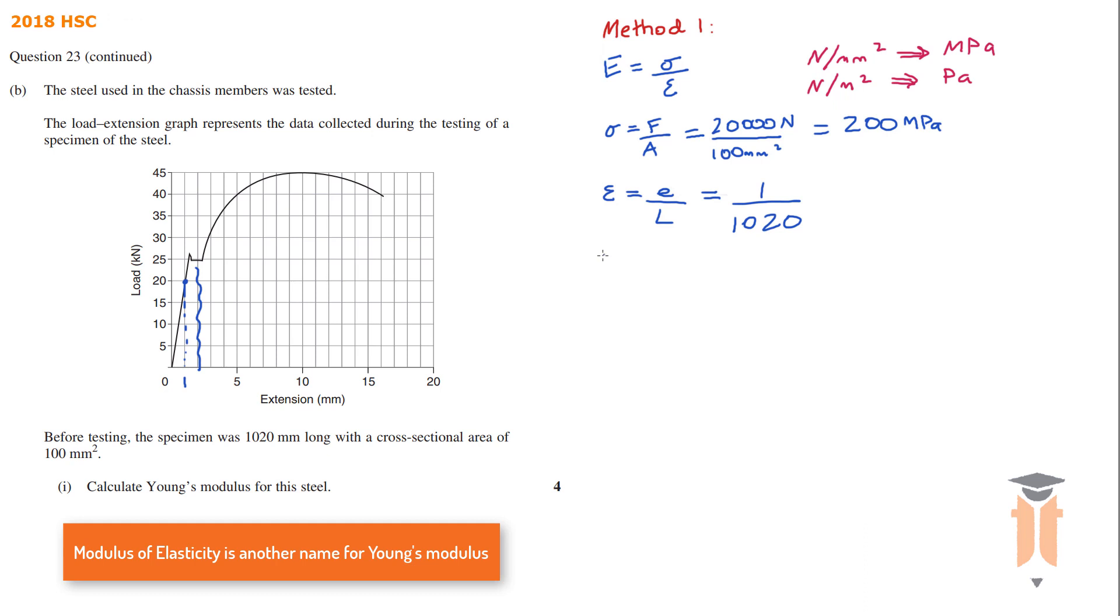So now we just need to substitute those values into our modulus of elasticity equation. And that's 200 divided by 1 over 1020. And that gives me an answer of 204,000 megapascals.